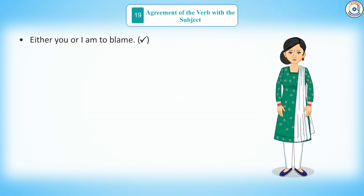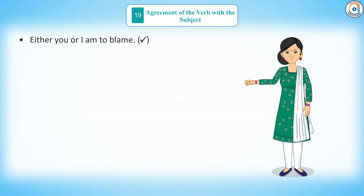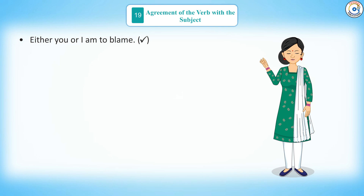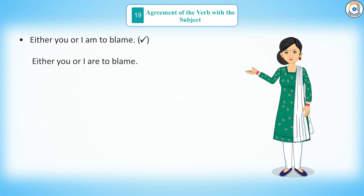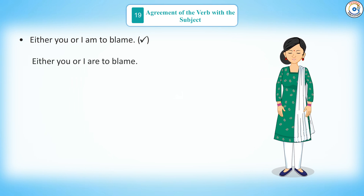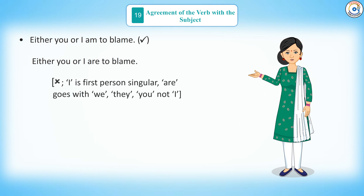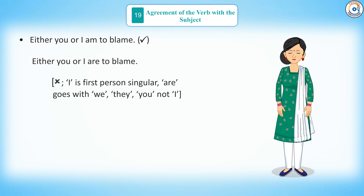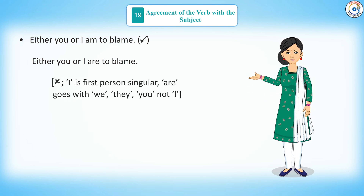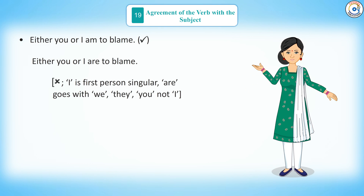Either you or I am to blame. Or: either you or I are to blame. 'I' is first person singular. 'Are' goes with we, they, and you — not I.